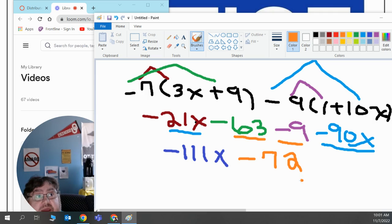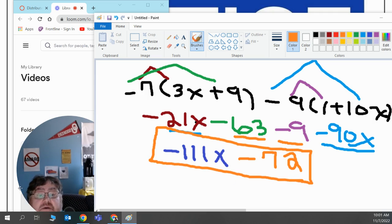Therefore, my answer is a negative 111x minus 72. And thank you for joining me in the Math Bunker.